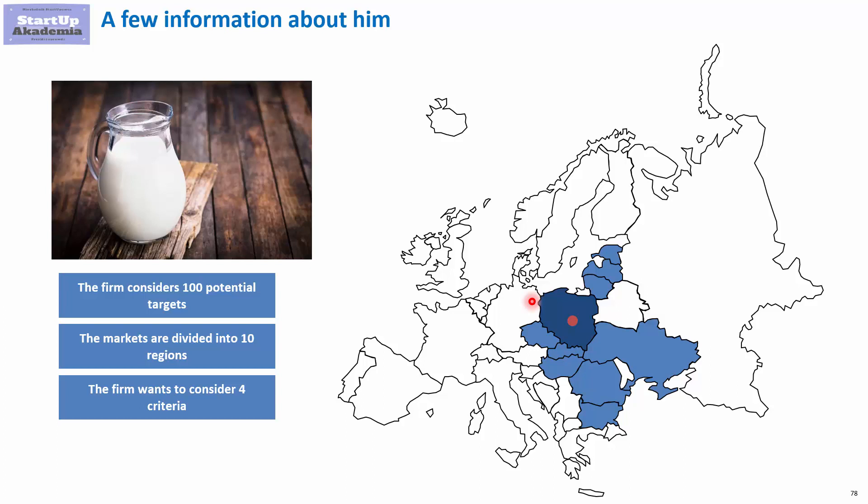In total, he will consider four criteria that we'll discuss in detail in the next lecture. Your task is to try and rank all potential targets and suggest which one would be the best choice given his criteria. We'll move on to the data in Excel and I'll show you what kind of data we have at our disposal, and you will be asked to play with it and try to rank each and every potential target.